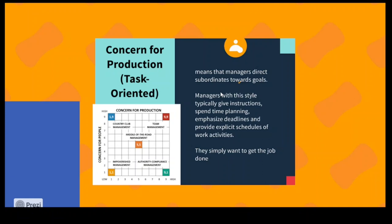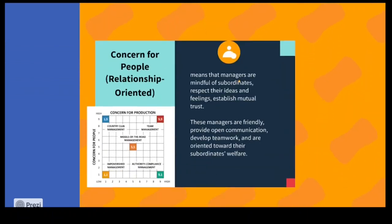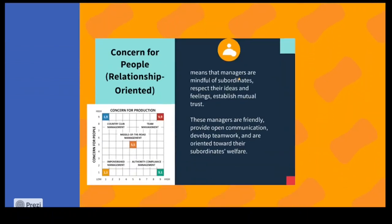On the grid, this style sits at maximum concern for production and very low concern for people. The concern-for-people-oriented style is the opposite — people matter to the maximum while production may be less. Here, the manager respects the ideas of people, lets them make decisions, and encourages teamwork.